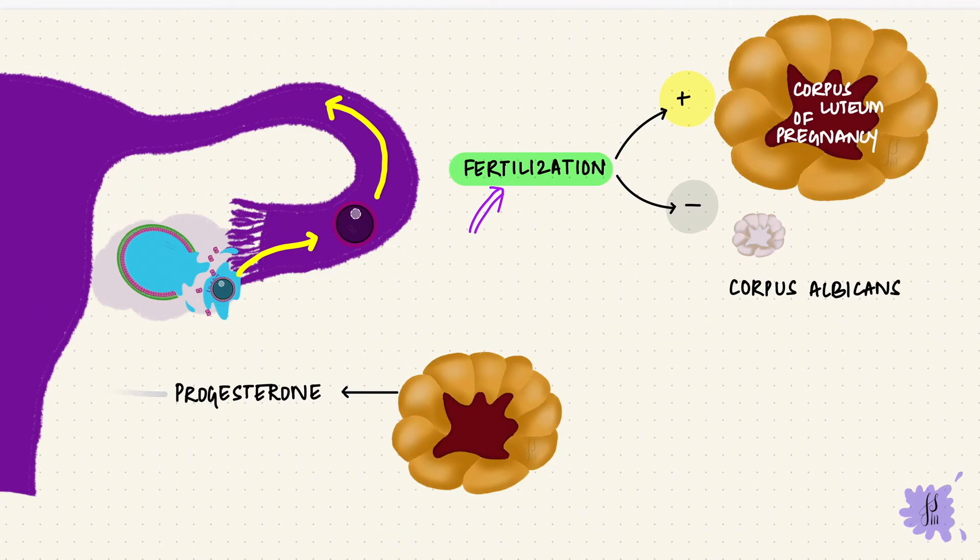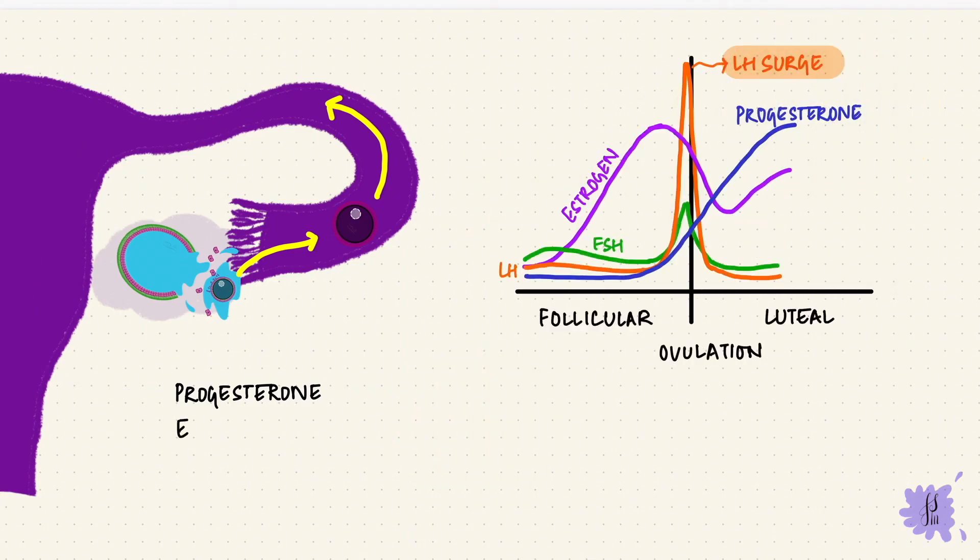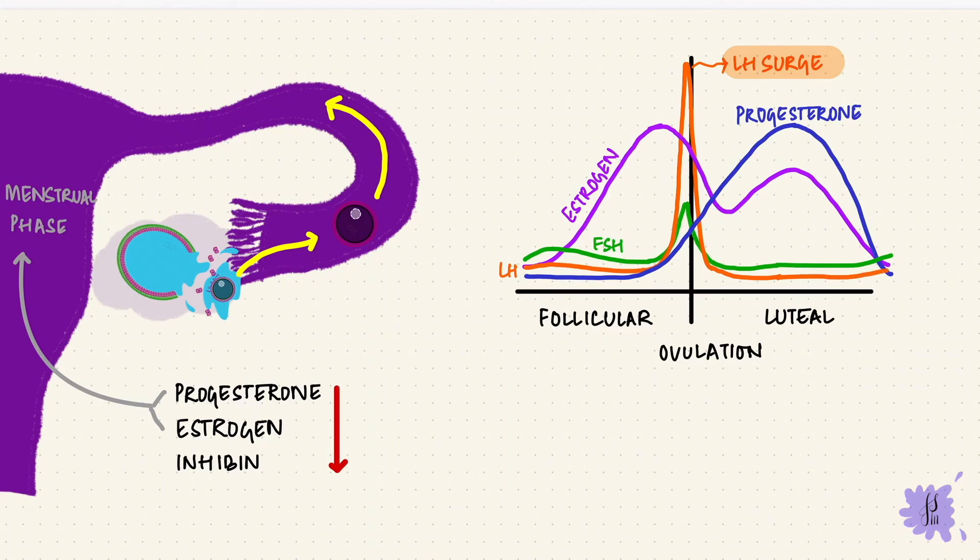The secretory function is gone. So the estrogen, progesterone, and inhibin levels all come down. The drop in estrogen and progesterone levels causes the uterus to go through the menstrual phase. So estrogen and progesterone levels have come down, and there's loss of that negative feedback, allowing the FSH levels to rise again, starting the next cycle.